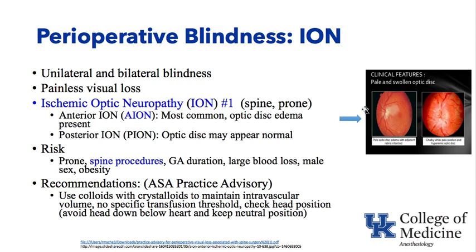Risks of ischemic optic neuropathy include being prone, large long spine procedures, large blood loss, male sex, and obesity. Recommendations include mixing some colloids in with crystalloids to maintain intravascular volume. There is no specific transfusion threshold — for example, hemoglobin of 8 alone does not trigger transfusion just because of this risk. Keep the head in a neutral position and avoid the head being below the heart. If someone wakes up with unilateral or bilateral blindness after spine surgery, ischemic optic neuropathy is right at the top of the list.